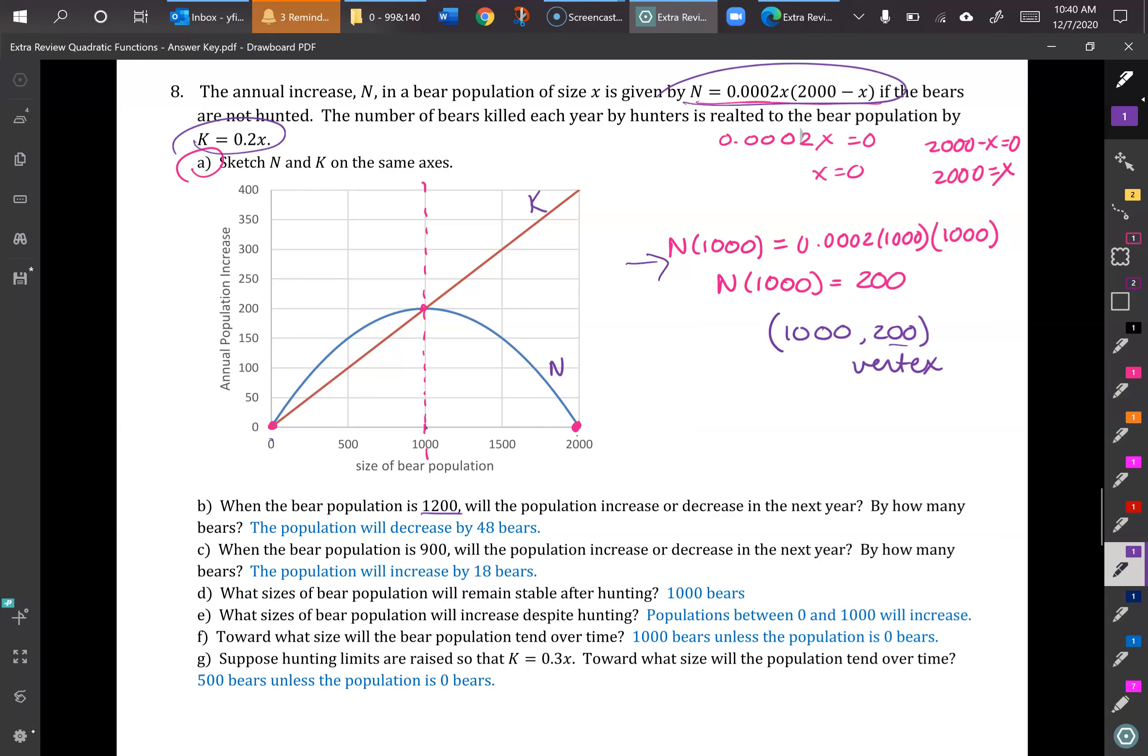So if I look at where 1200 is, remember N, the blue curve, the quadratic, represents my bear population. This is bears killed by hunters, but this is the one where it's going to start decreasing again. So we need to figure out the size based on that. If I look at my graph I have 1200, which would be right about here, and the y-axis is how much it increased, or actually in this case it's going down, so it's decreasing a bit there. So we need to use that information.